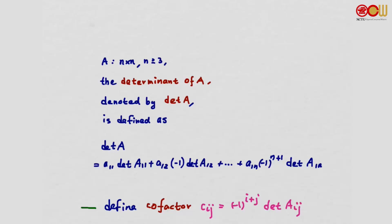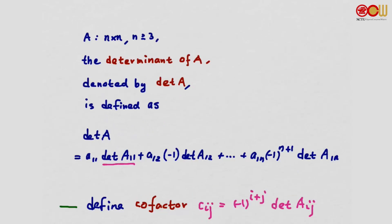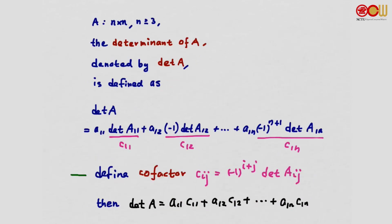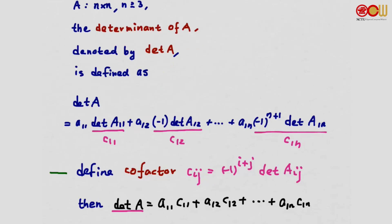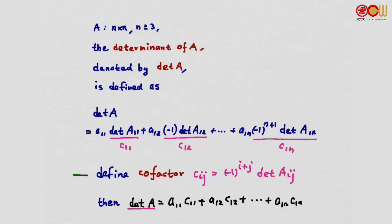To simplify the notation, we define the cofactor Cij as det(Aij) times (-1)^(i+j). Then we can write the determinant of A in a simpler manner: det A equals A11 C11 plus A12 C12 all the way to A1n C1n. This definition is called cofactor expansion along the first row.